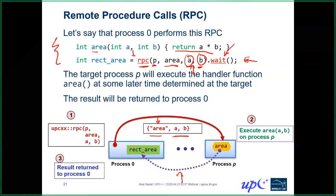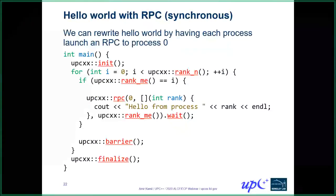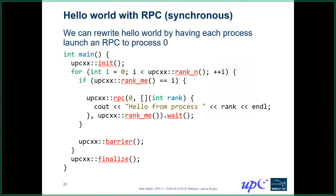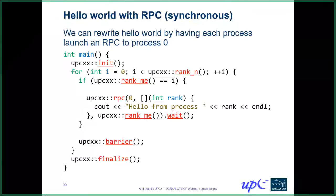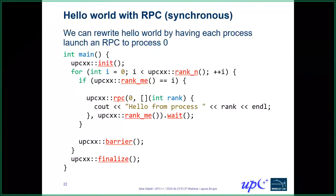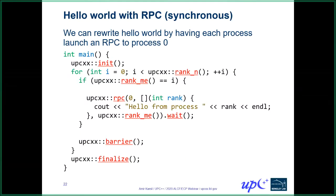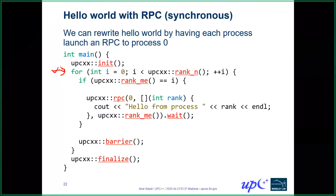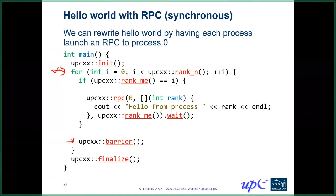Let's look at an actual RPC example. These are simple examples to illustrate library features. Here we've rewritten Hello World. In our initial version we didn't have any ordering guarantees because there was no synchronization. This version does guarantee ordering: we have a loop over process numbers and essentially the processes take turns doing an RPC over to process 0 with their Hello World, followed by synchronization before moving on to the next iteration.